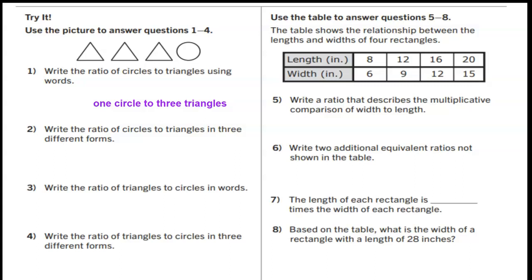If we're doing circles to triangles we will write one to three, one colon three, or one over three. Remember you can write ratios as a fraction using the word to or using a colon.